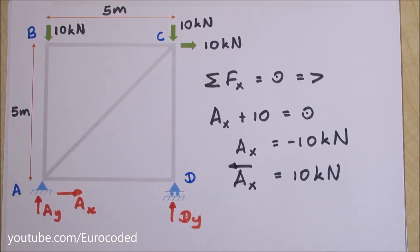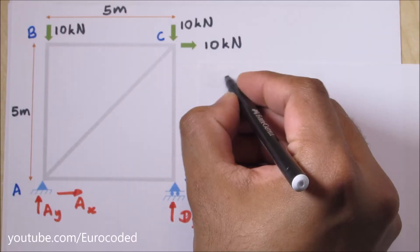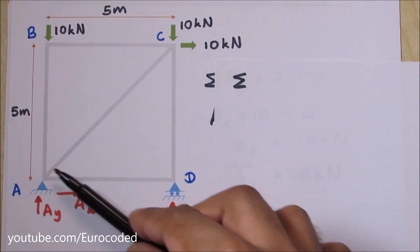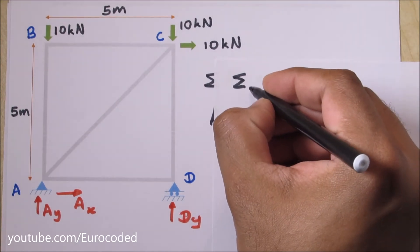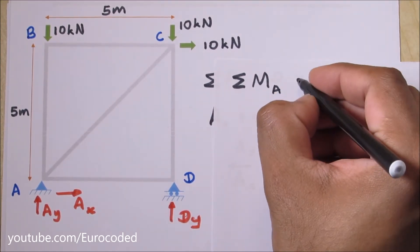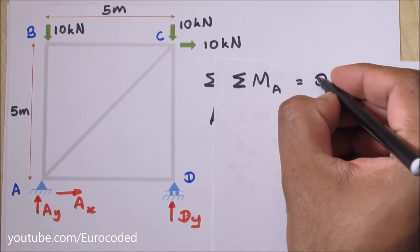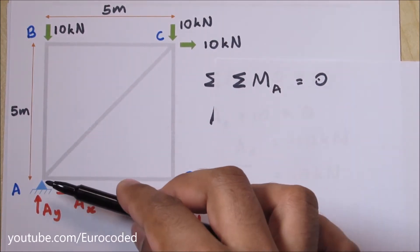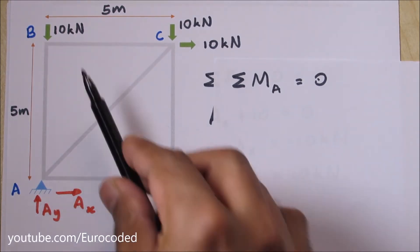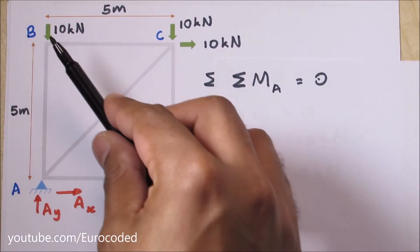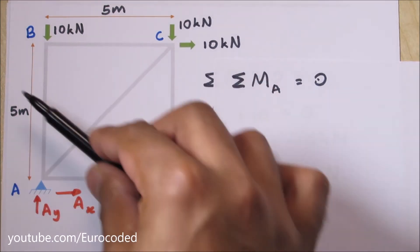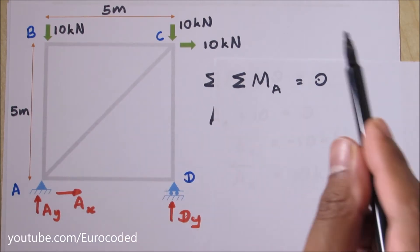Next, I'm going to look at moment equilibrium. I'm going to take moments about point A. So looking at moment equilibrium, we can write: total moment at A is equal to zero. The lever arms for AX, AY, and the 10 kilo Newton at A are all zero, so these three forces have no moment about point A.